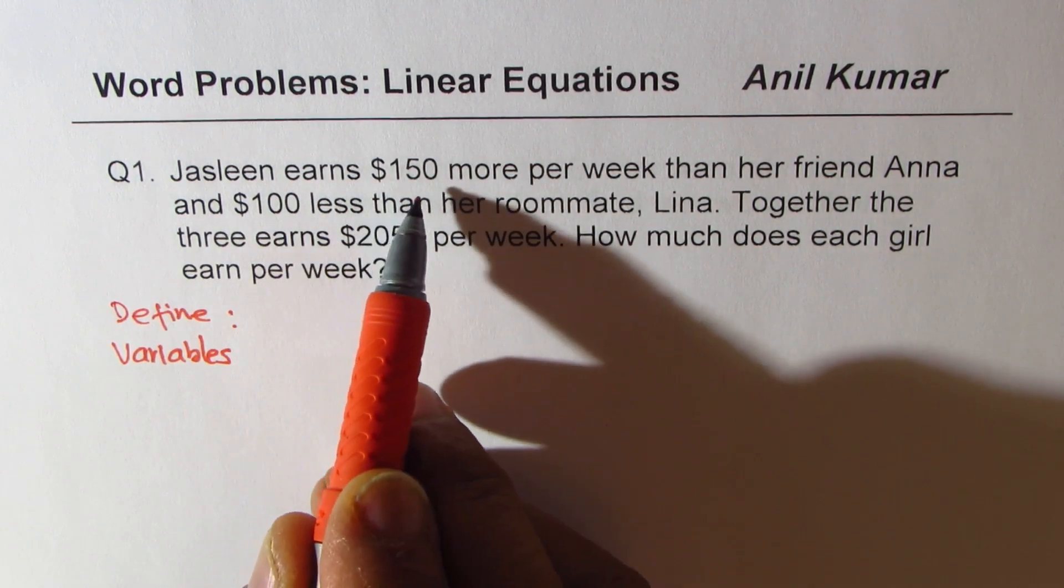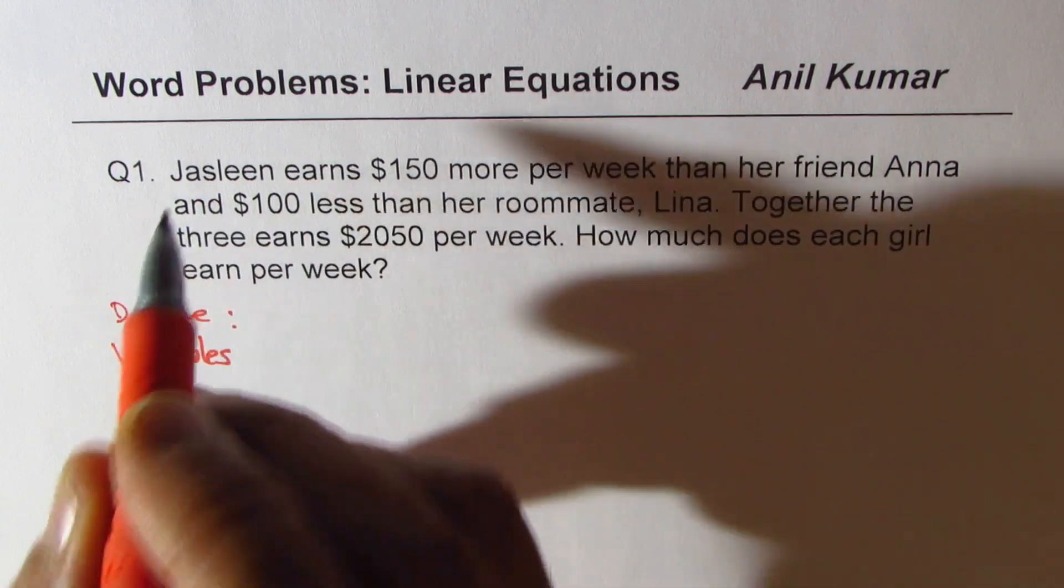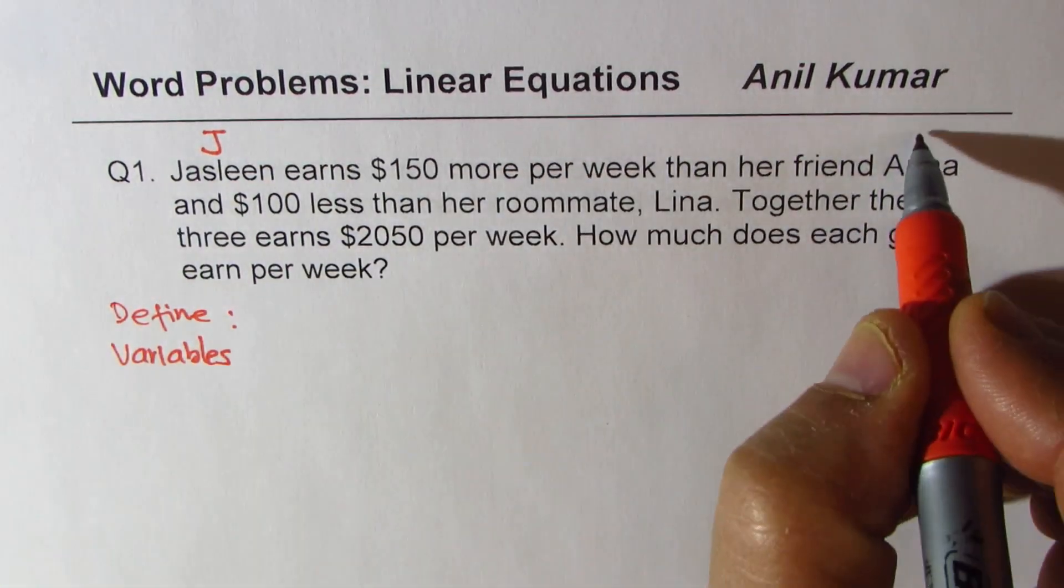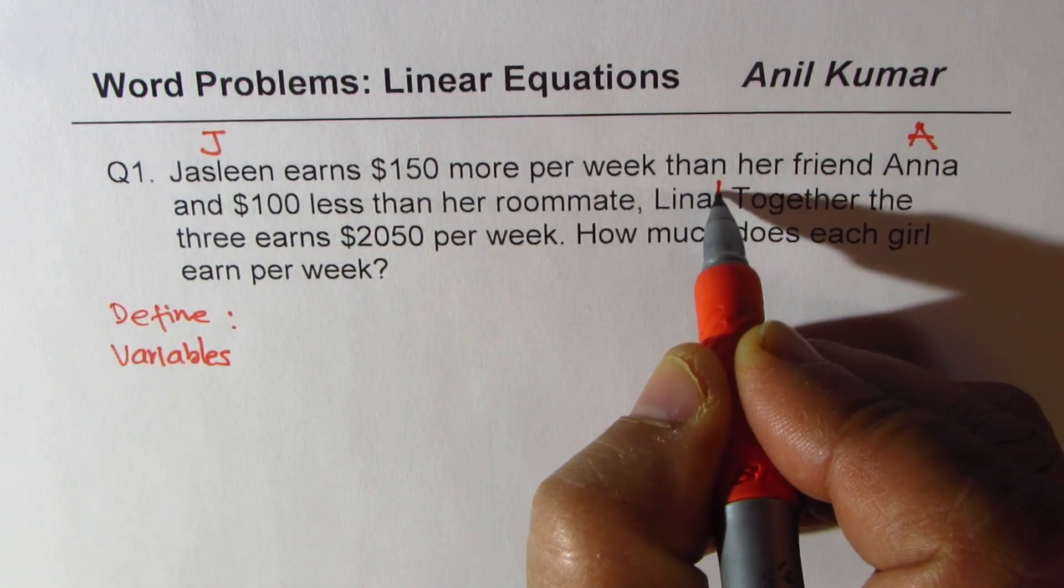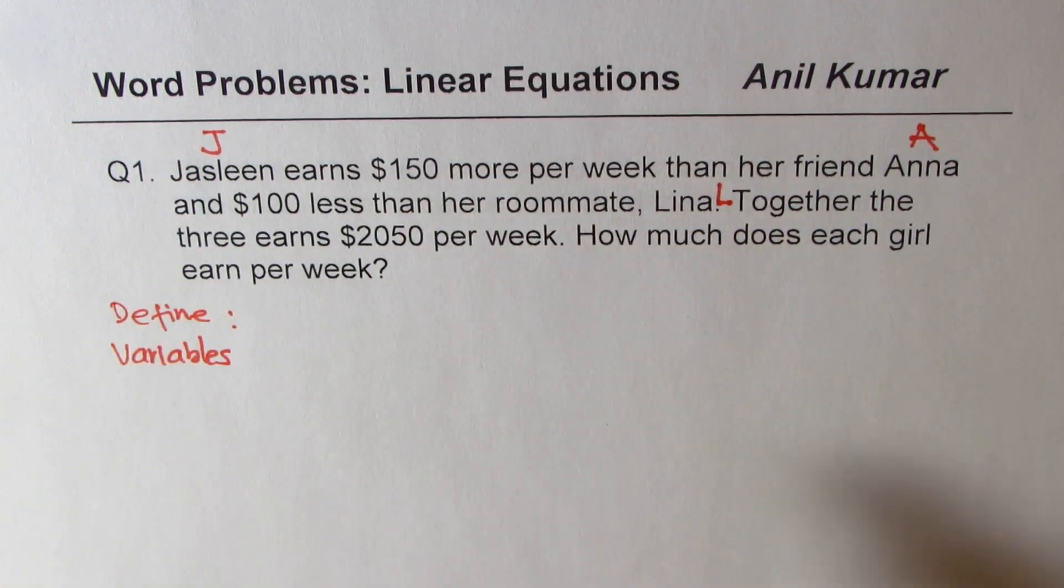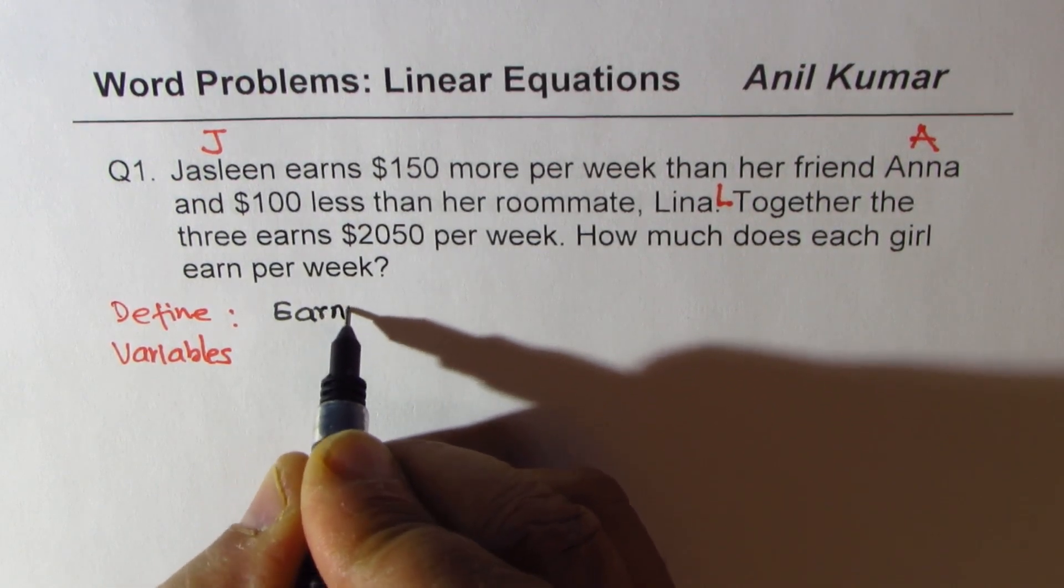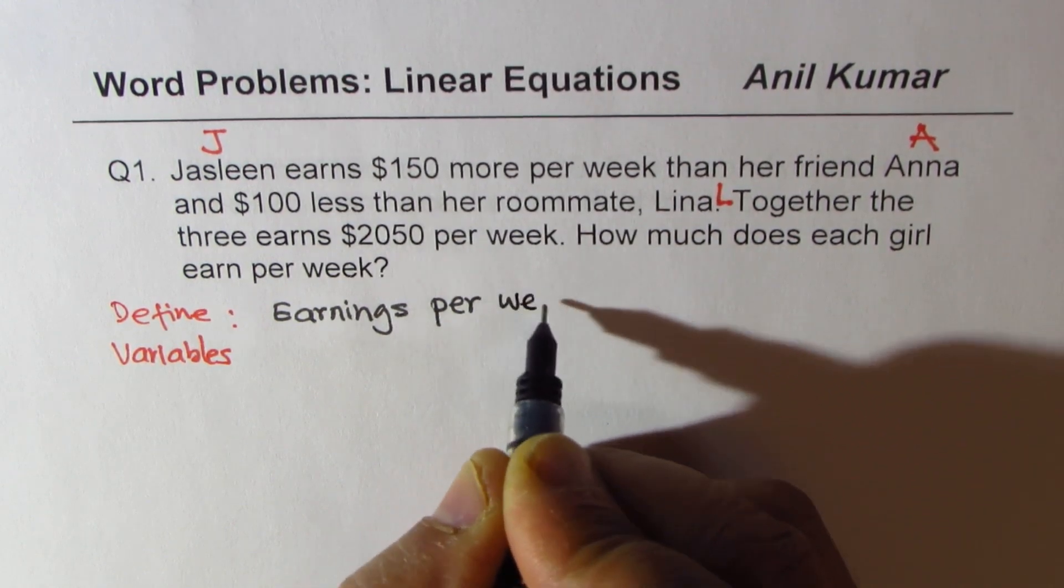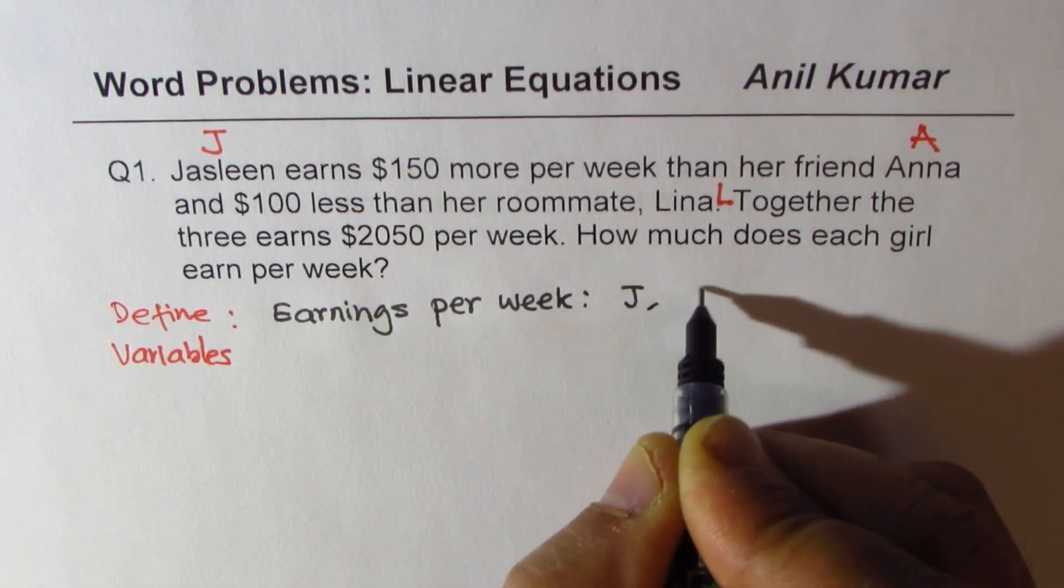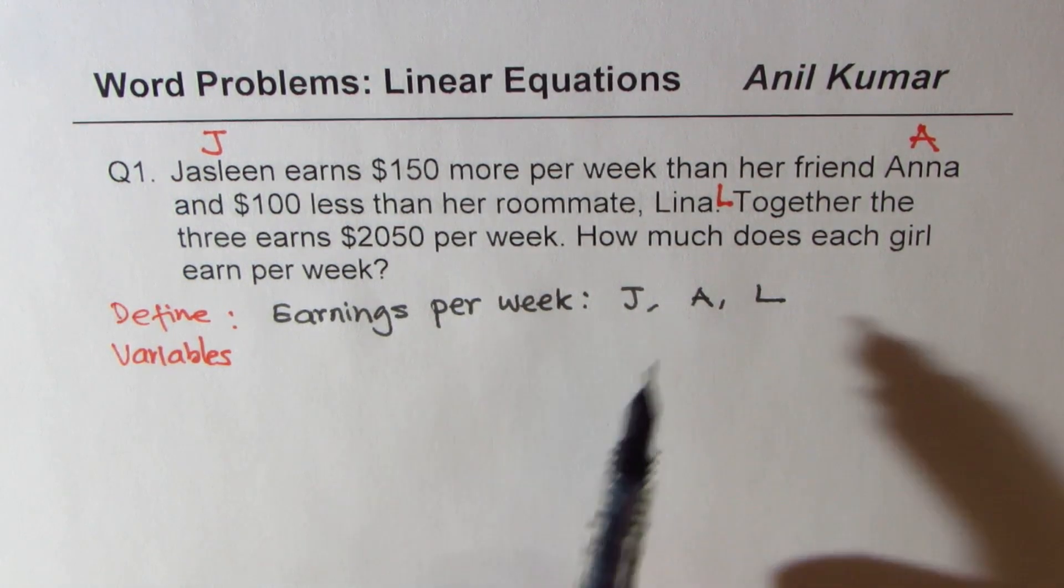Jasleen earns $150 more per week than her friend Anna, so earning of Jasleen I'll say J. Earning of Anna I'll say A. And $100 less than her roommate Lina, so that will be L. These are my variables - earnings per week for J, A, and L for the three girls respectively. I'm not writing everything, but you need to write. So we have defined our variables.